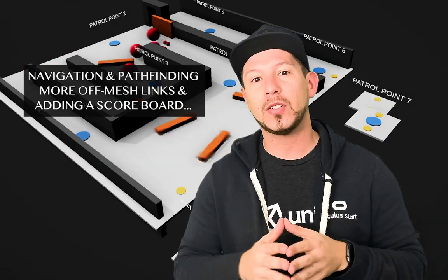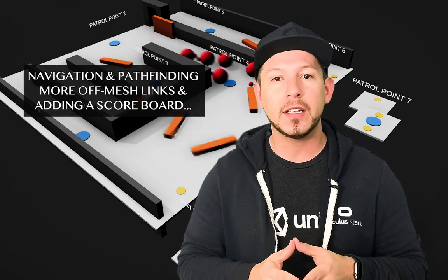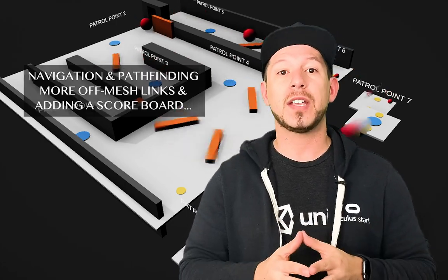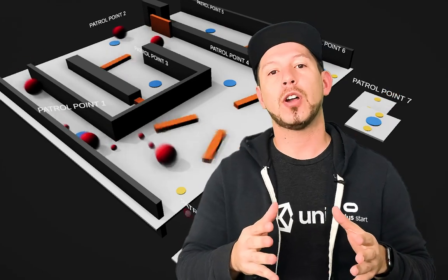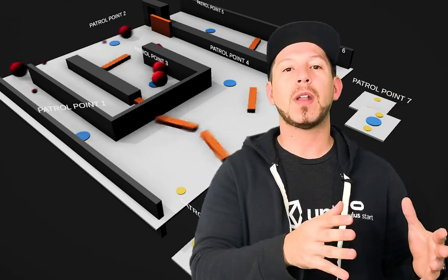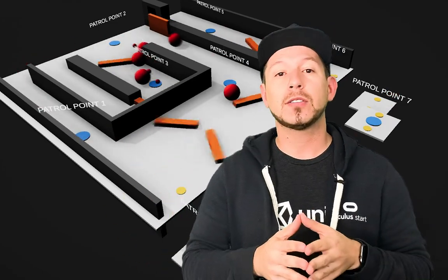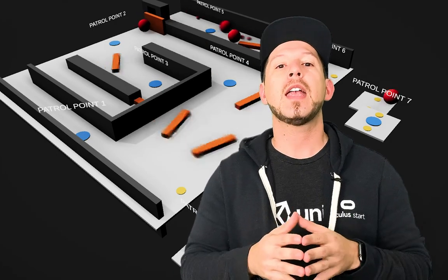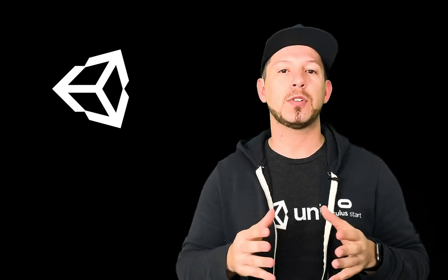Today I'm pretty excited because I'm going to continue the videos on navigation and pathfinding. We're going to be introducing a lot of off-mesh links that are going to allow us to jump from one platform to the other. I'm also going to be tracking a score — as the spheres go around the level, we're going to capture who reaches the last destination point. So let's jump into Unity and start looking at it.